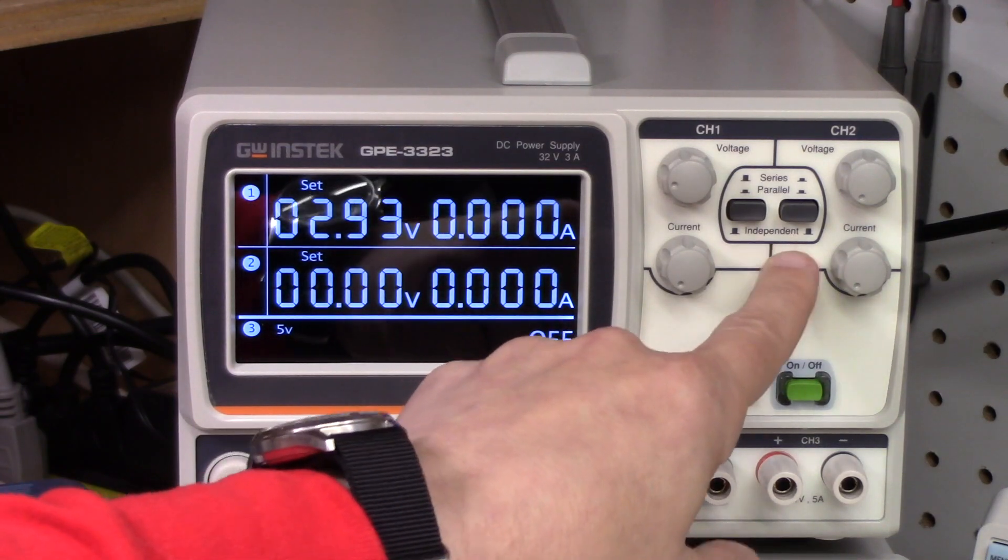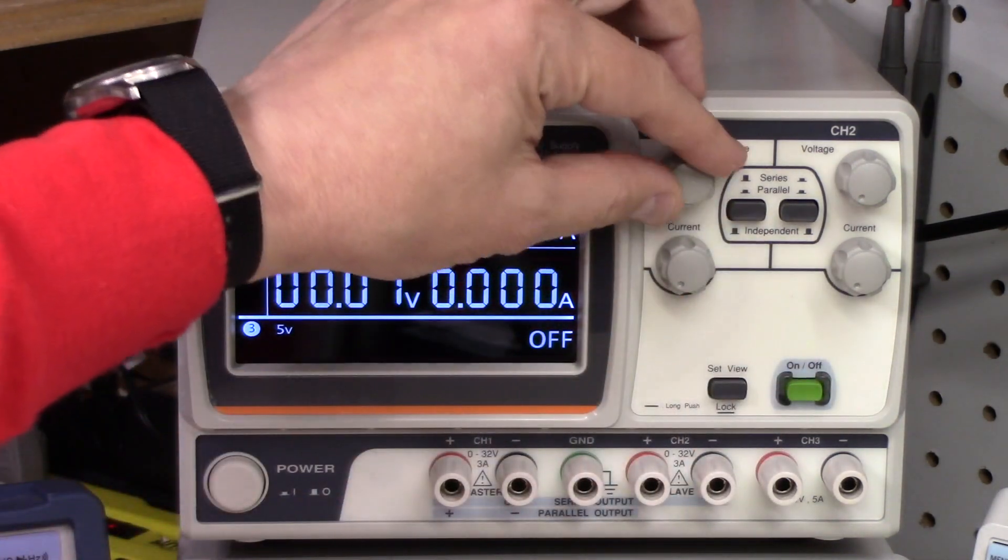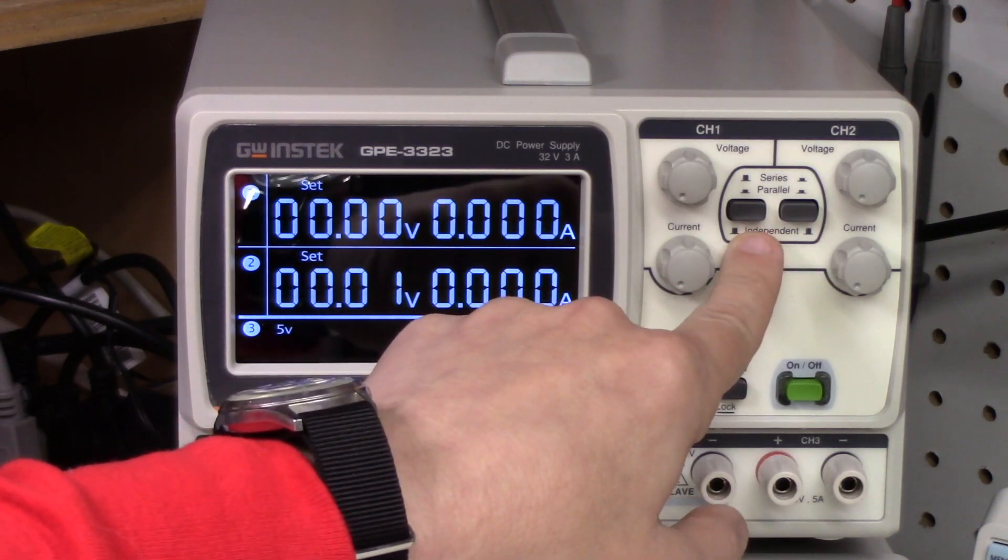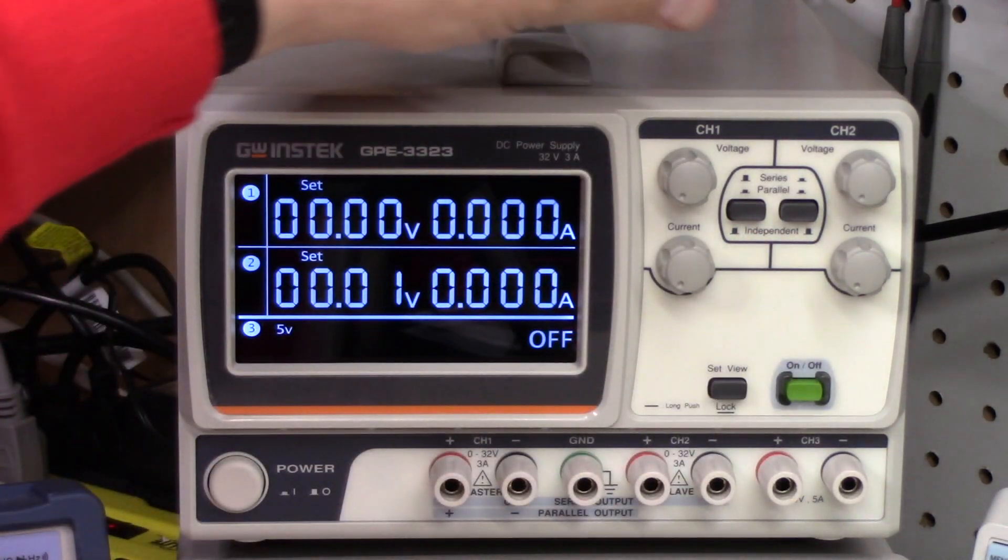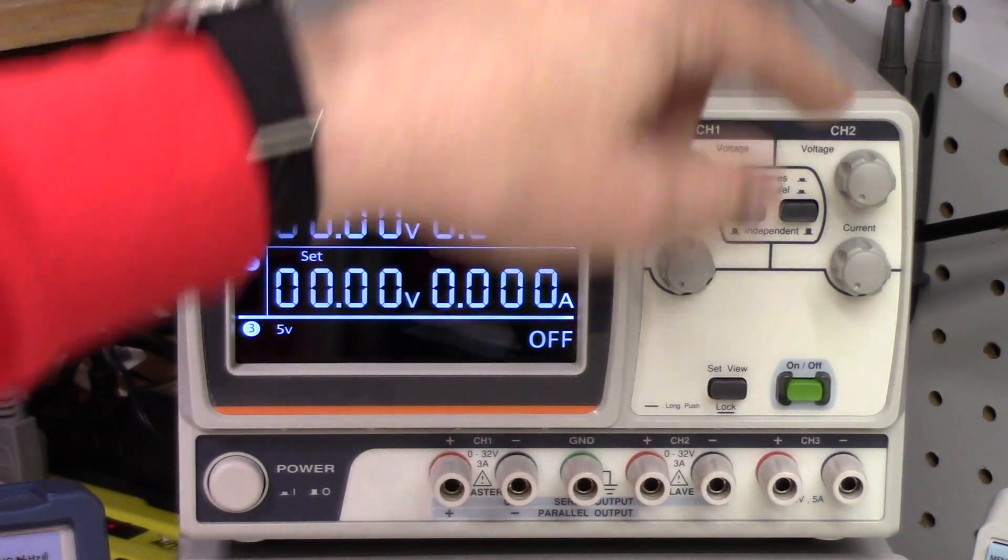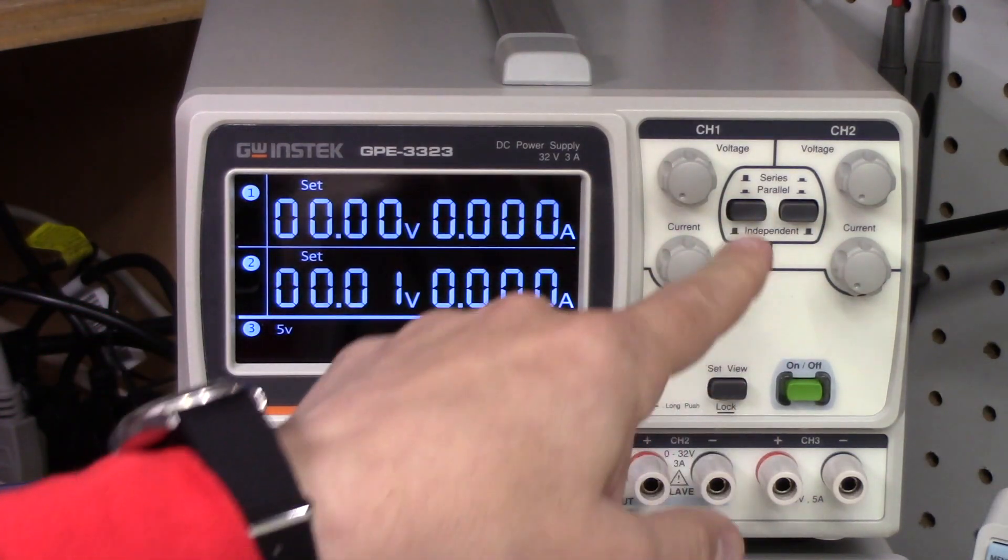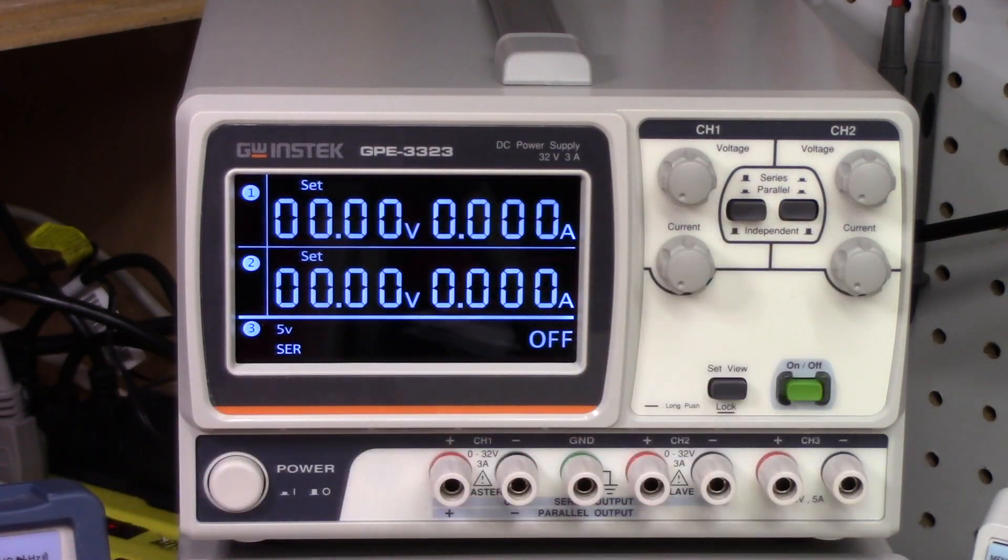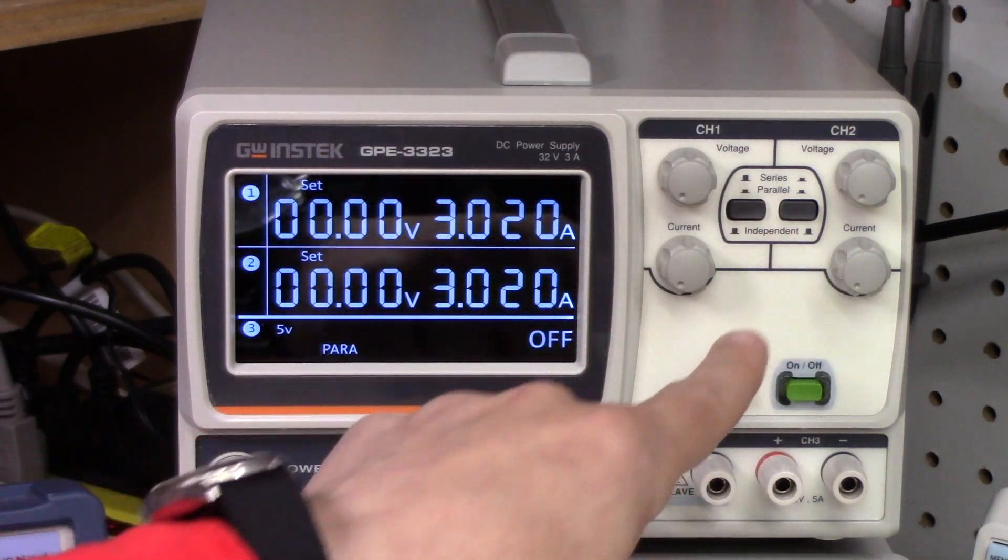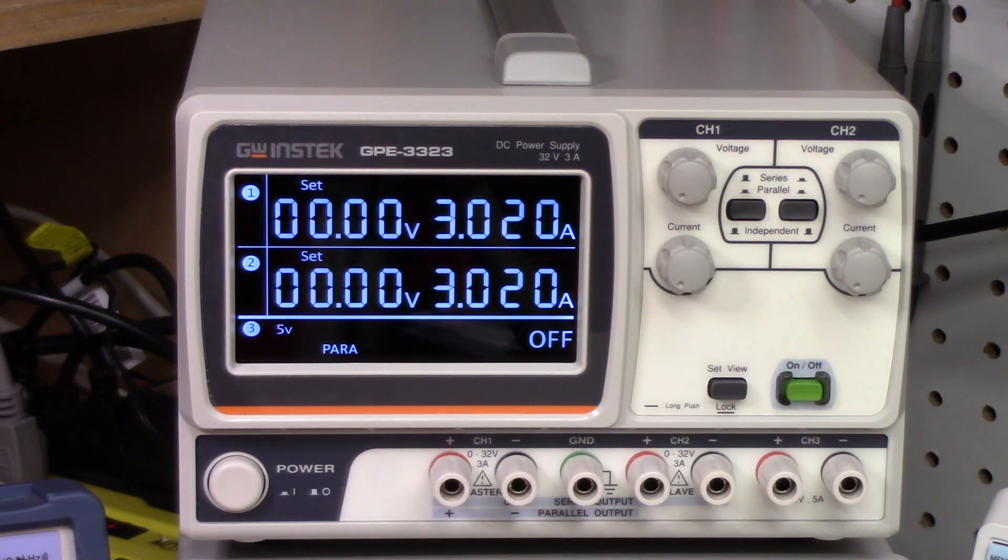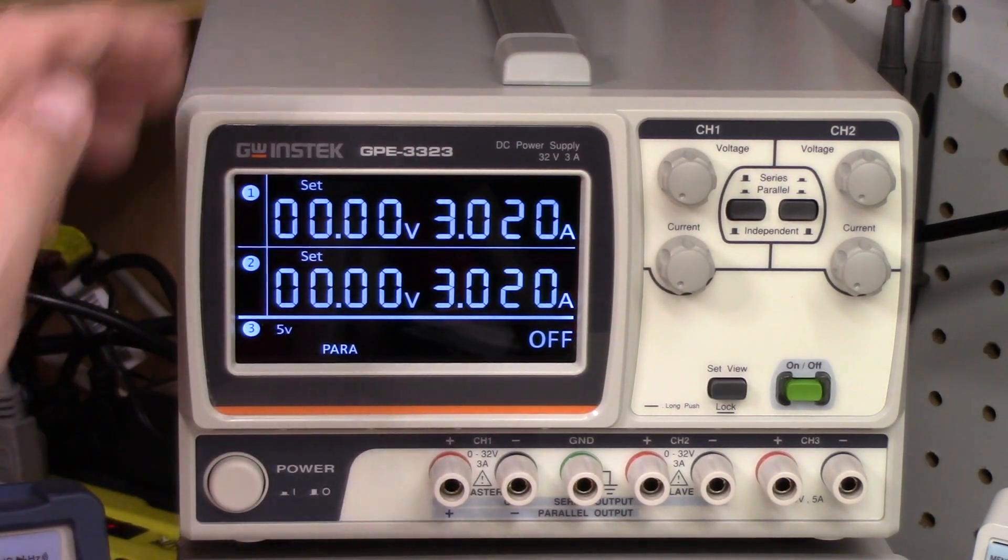And you can operate this in independent mode. So channel 1 and channel 2 are independent of one another. Or in series by selecting these switches here. So that this is out and this is down. Or in parallel. Notice that when you switch, when you choose parallel, that both of the channels 1 and 2 automatically opt to the maximum current that the unit will provide.